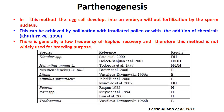Coming to parthenogenesis. It is also one method of obtaining haploids. In this method, egg cells develop into an embryo without fertilization by the sperm nucleus. This can be achieved by pollination with irradiated pollen or with addition of chemicals. There is generally a low frequency of haploid recovery, and therefore parthenogenesis is not widely used in breeding to generate haploids.